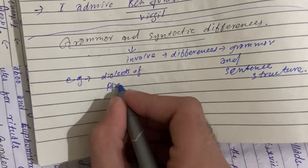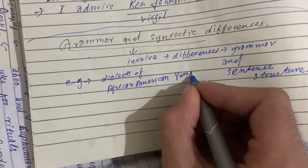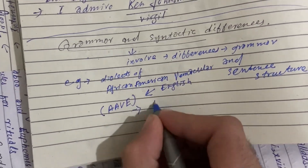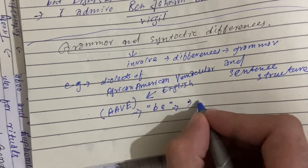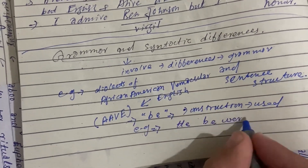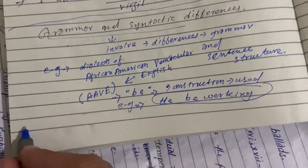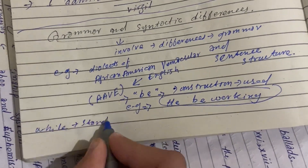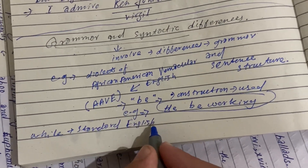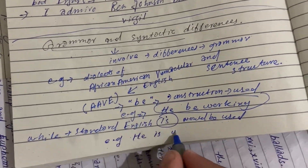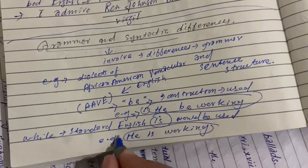Another example is grammar and syntactic differences. Regional variations can involve differences in grammar and sentence structure. For example, in some dialects of African American Vernacular English, the habitual 'be' construction is used — as in 'he be working' — to express an ongoing or repeated action, whereas in standard English the present tense 'he is working' would be used.